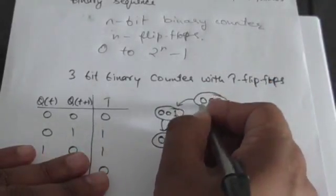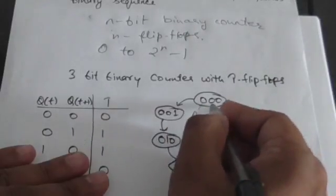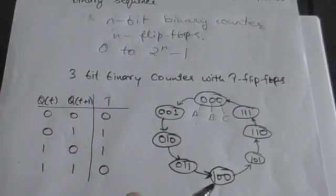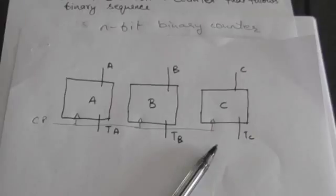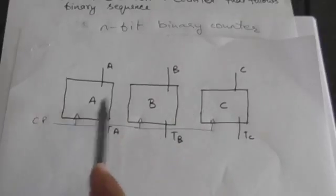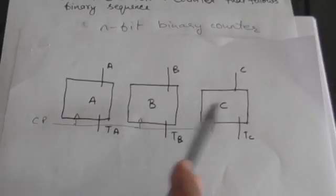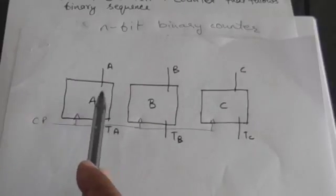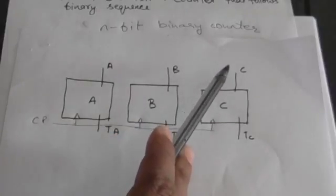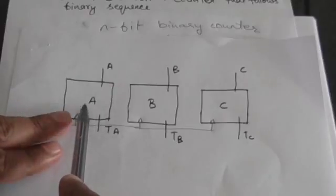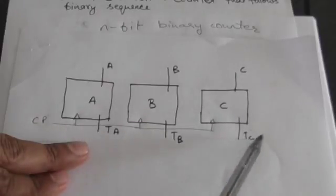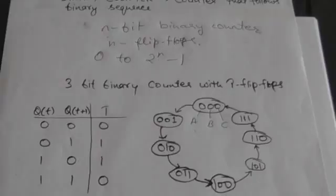Let us call the leftmost bit A, the middle bit B, and the rightmost bit C. Since we are designing a 3-bit binary counter with T flip-flops, we require three T flip-flops: A, B, and C. The output of flip-flop A is bit A, output of flip-flop B is bit B, and output of flip-flop C is bit C. The input for flip-flop A is TA, for flip-flop B is TB, and for flip-flop C is TC.